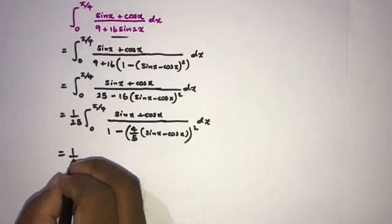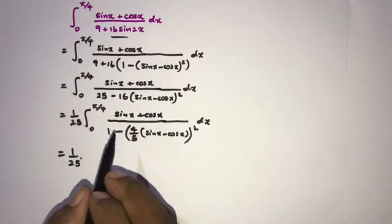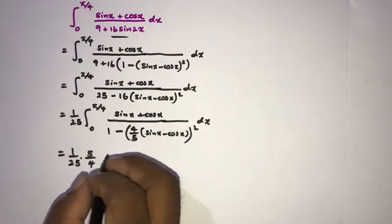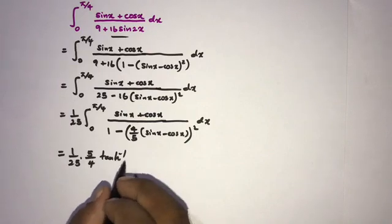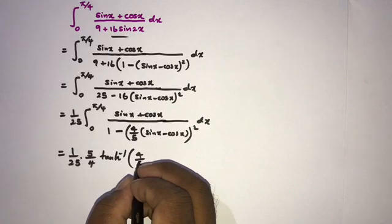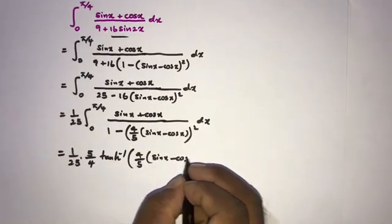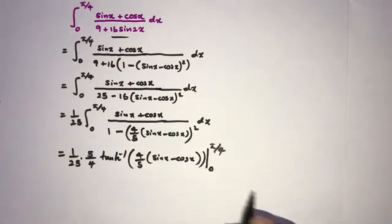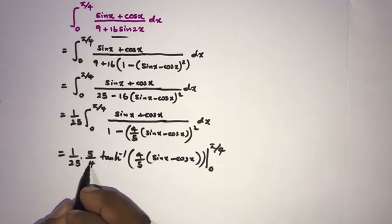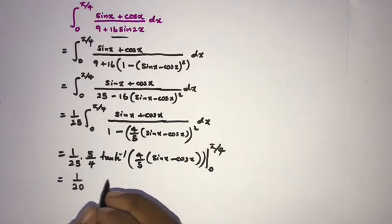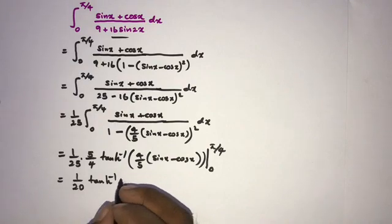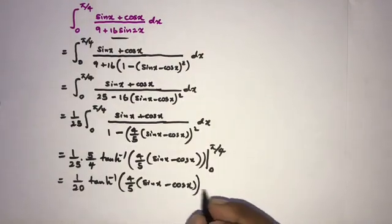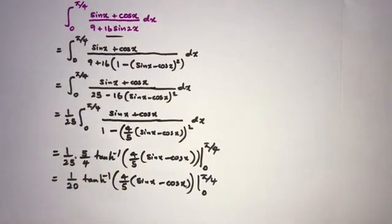This is a well-known integral leading to the inverse hyperbolic tangent function. So we get 1/25 times (1/(4/5)) = 5/4, times the inverse hyperbolic tangent of (4/5·(sin x − cos x)), evaluated from 0 to π/4. Simplifying 1/25 · 5/4 = 1/20, we have (1/20)·arctanh(4/5·(sin x − cos x)) from 0 to π/4.